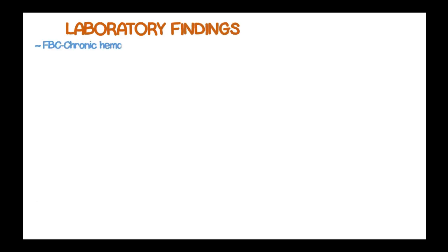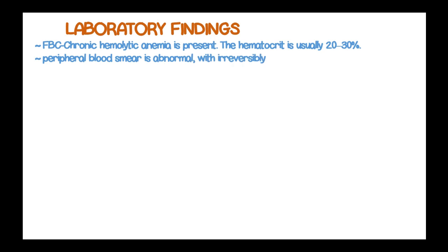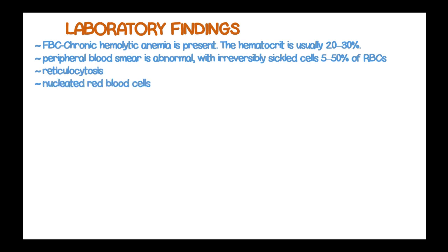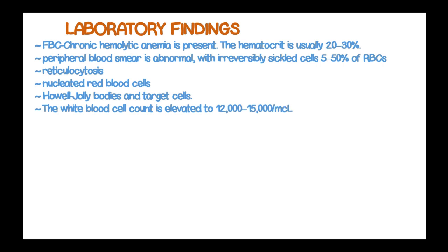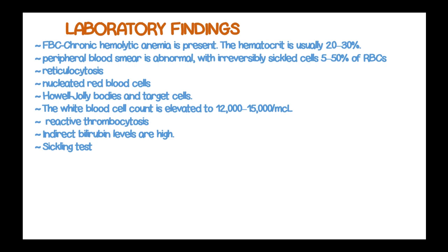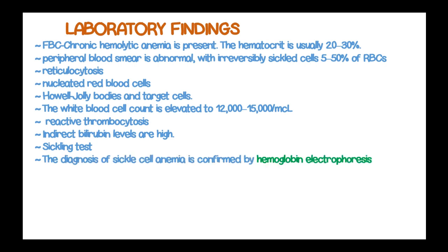Laboratory findings include a full blood count showing chronic hemolytic anemia with a hematocrit usually around 30%. Peripheral blood smear is abnormal with irreversibly sickled cells occupying 5–50% of red blood cells and reticulocytosis. Nucleated red blood cells are present. Features of hyposplenism such as Howell-Jolly bodies and target cells are present. White blood cell count is elevated to about 12,000–15,000 per microliter, with reactive thrombocytosis and high indirect bilirubin levels. The sickling test can be used to diagnose these patients and is confirmed by hemoglobin electrophoresis.